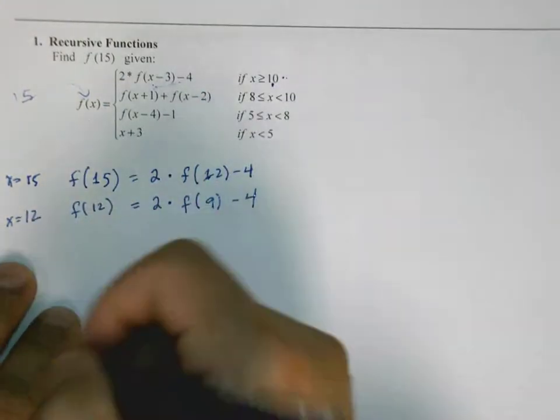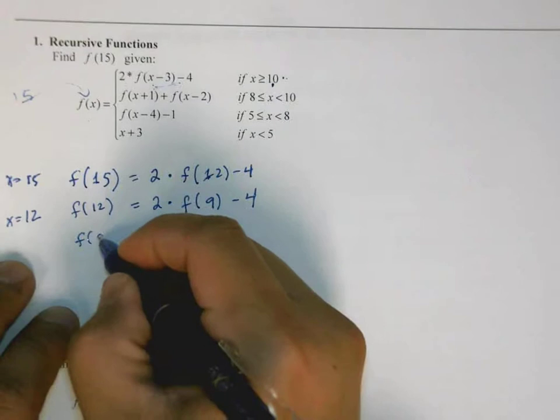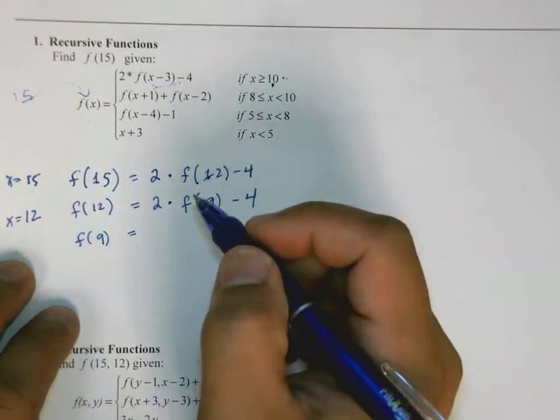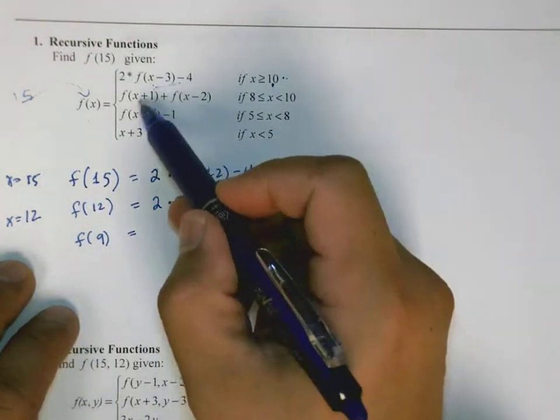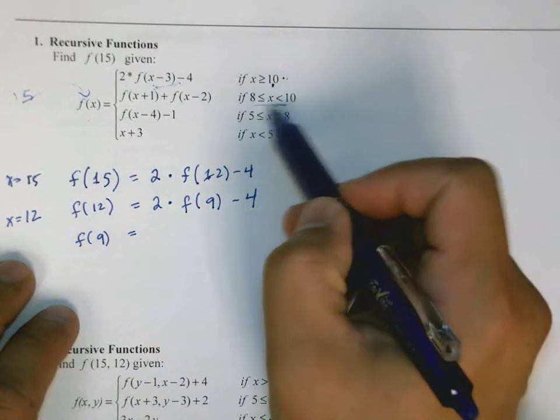Well, we don't know what f of 9 is, so we keep on going, f of 9. And when we pass in 9 into here, we hit this line of, this condition right here.